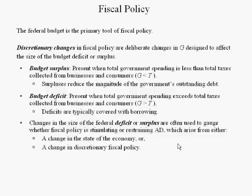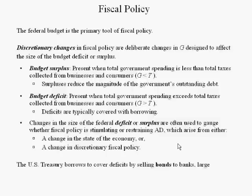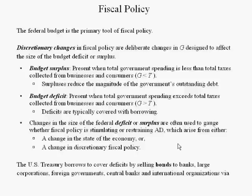Changes in the size of the federal deficit or surplus are often used to gauge whether fiscal policy is stimulating or a strain on demand, which arise from either a change in the state of the economy or a change in discretionary fiscal policy. The Treasury borrows to cover deficits by selling bonds to banks, large corporations, foreign governments, central banks, and international organizations via bond auctions.